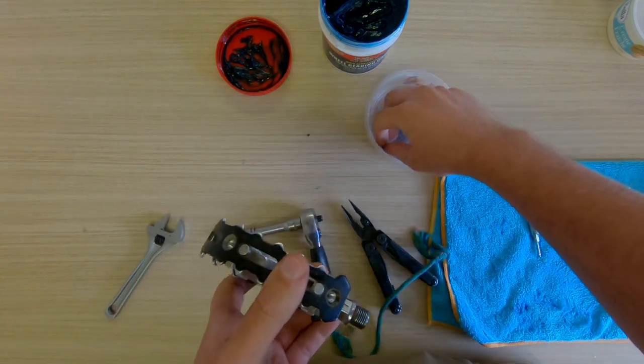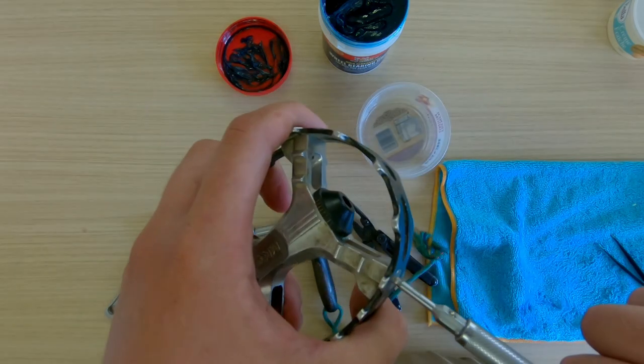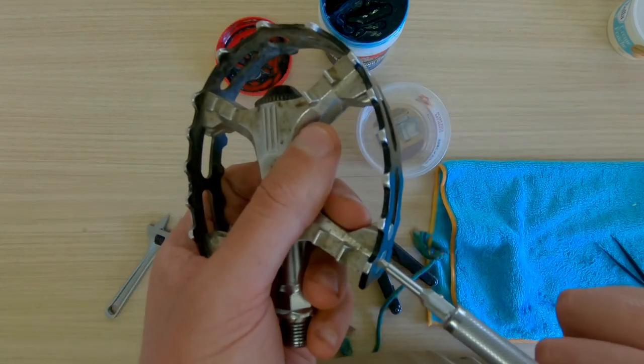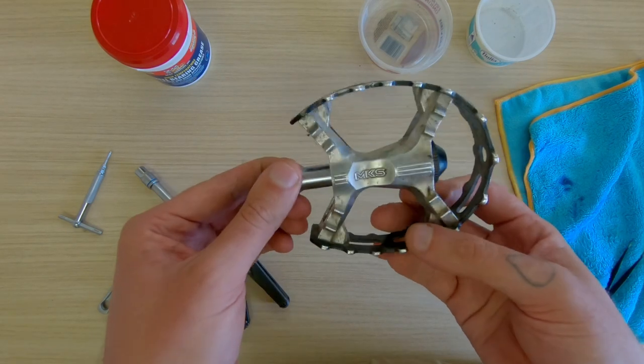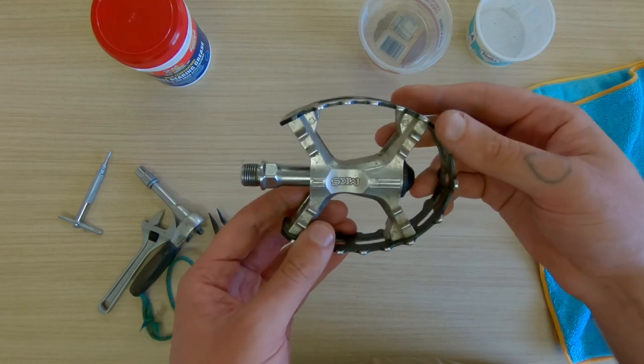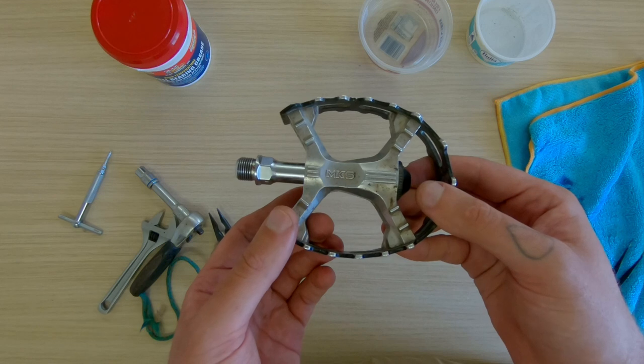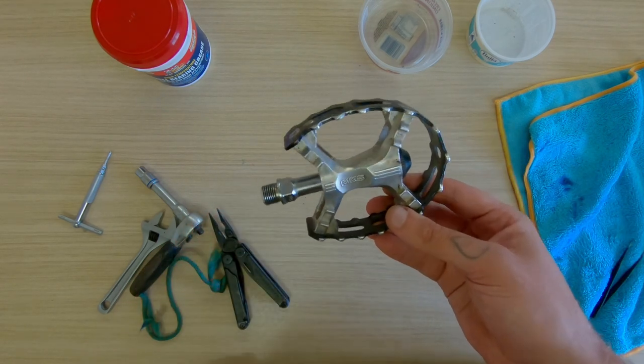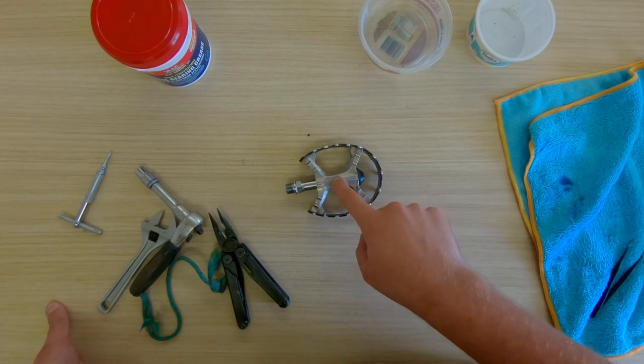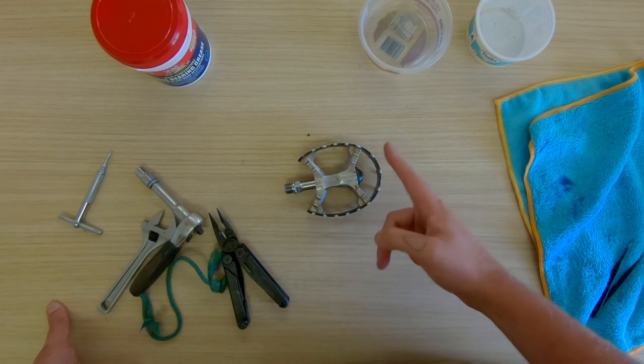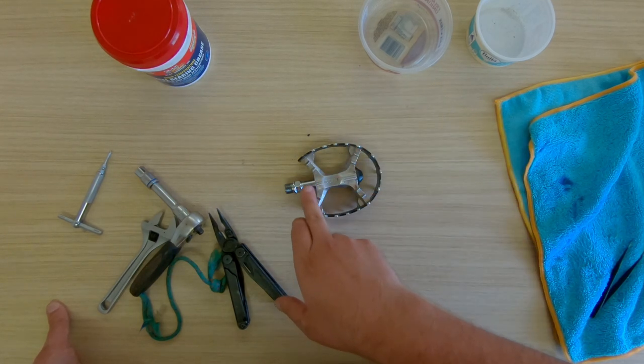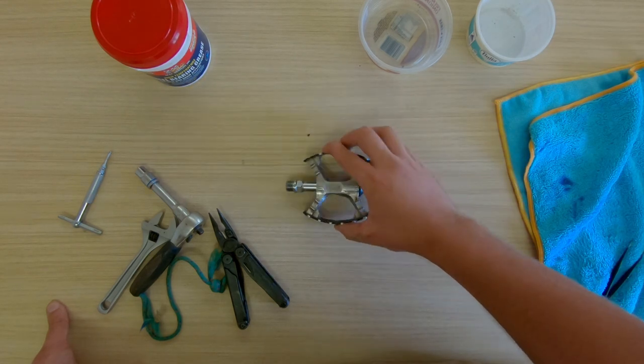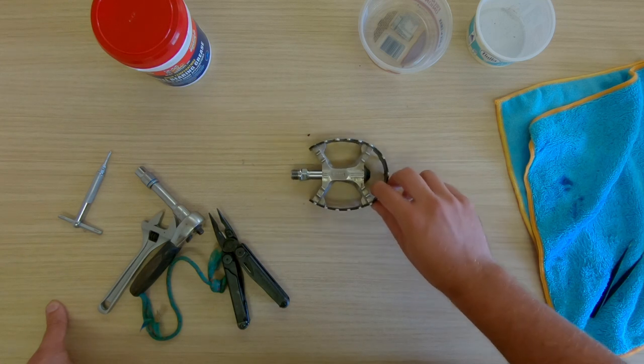Now we just stick the cage back on. There you have it—one MKS XC3, aka the bear trap, re-greased, repacked, serviced, and hopefully good to go for another few thousand kilometers. Like I say, I don't know if this is how MKS would do it. I've seen a lot of people put a lot more grease than that in there, like to the point where the entire interior mechanism is just filled with grease. I've also been told you shouldn't do that, so I don't know. This works for me. Just a quick and dirty video for today. I hope someone finds it useful.